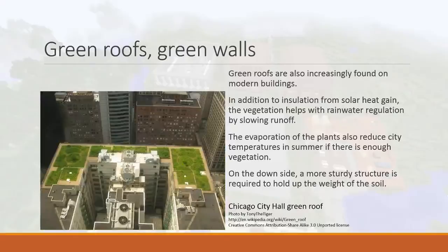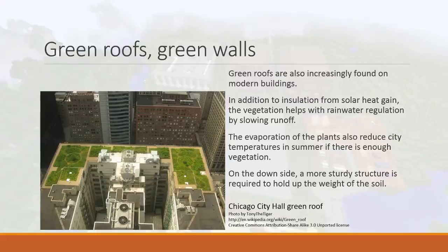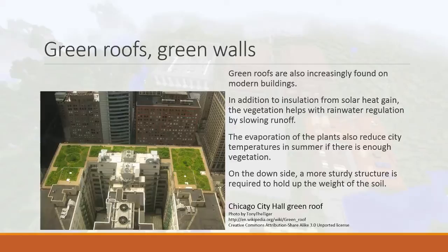This is the City Hall in Chicago. These days, green roofs are becoming more common, and there are many benefits to putting plants on your roof. It provides insulation against solar heat gain — as the sun shines on your building, having plants there causes evapotranspiration, releasing moisture into the air and reducing the heat entering the building, which helps reduce the need for air conditioning. The plants and a little soil also slow down rainwater runoff — instead of sheeting straight off the roof, water is slowed down, helping with rainwater regulation.